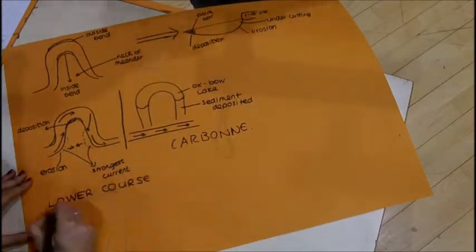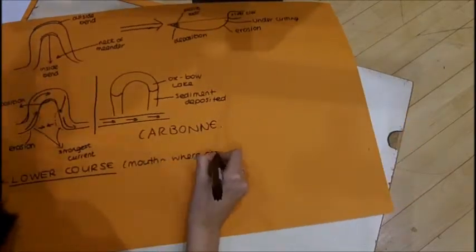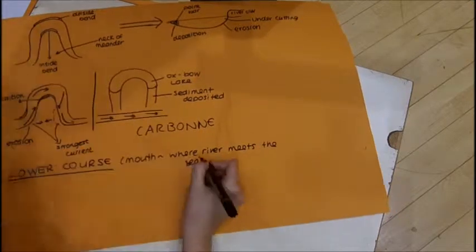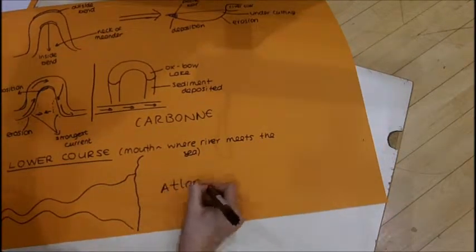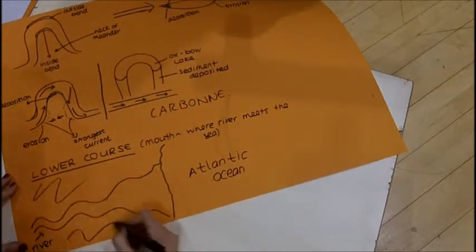Lower course of the river. The mouth of the Garonne, the Gironde Estuary, is located in Bordeaux and flows into the Atlantic Ocean. Here, the land is at sea level, so the river's energy is used to widen the river.